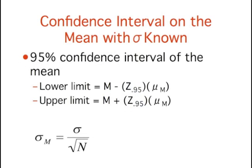In general, you compute the 95% confidence interval for the mean with this formula. Z sub 0.95 is the number of standard deviations extending from the mean of a normal distribution required to contain 0.95 of the area. Sigma sub m is the standard error of the mean.